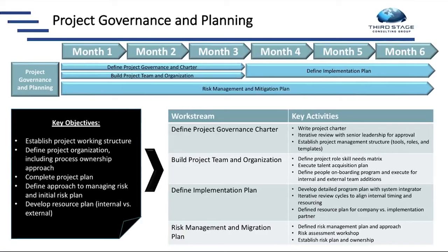The fifth work stream is project governance and planning. This is where we establish the project charter, put together the project team, develop the overall implementation plan, and build a program management structure that includes not just your system integrator but also activities for your internal resources and any third parties — such as organizational change consultants or data consultants. Your system integrator typically only provides a plan for their activities, but you need a broader program management plan. Along with that, we identify risks and develop risk mitigation plans as we go through the process.